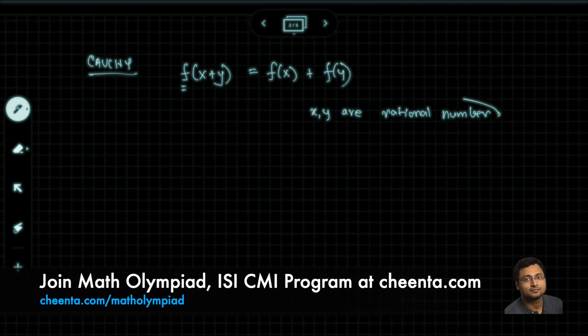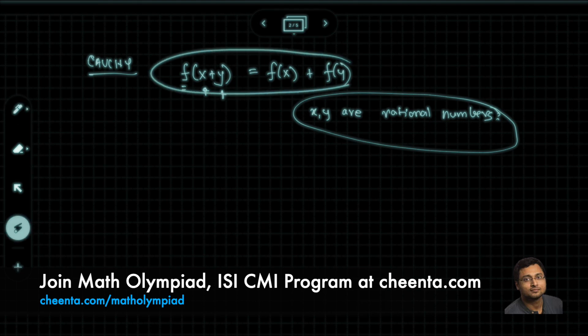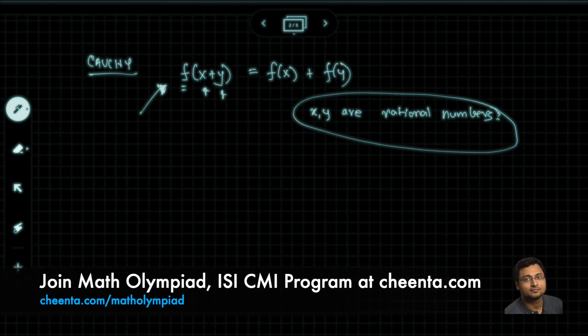But up to rational numbers, where the input values are rational numbers, this is an easy problem. So we discussed this in our Math Olympiad and ISI CMI entrance programs, but you can try this. And if you can find out the answer, put it in the comment. OK.